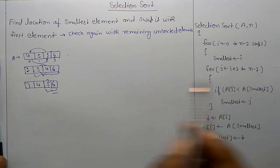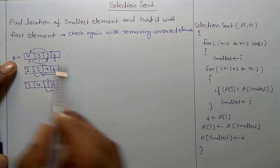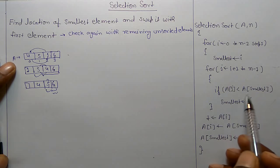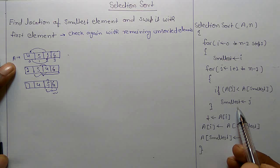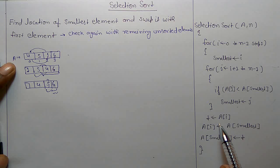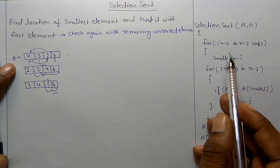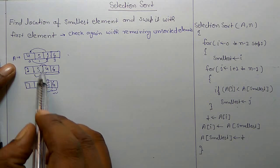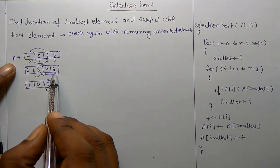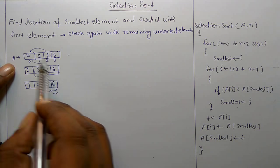Now for j equal to i plus 1 to n minus 1, from this comparison we can find the smallest value in the array. Now these three steps swap the value from the first place, whatever is i. Again, i is increased and in the remaining subarray we have to find the smallest element and swap it with the first element.